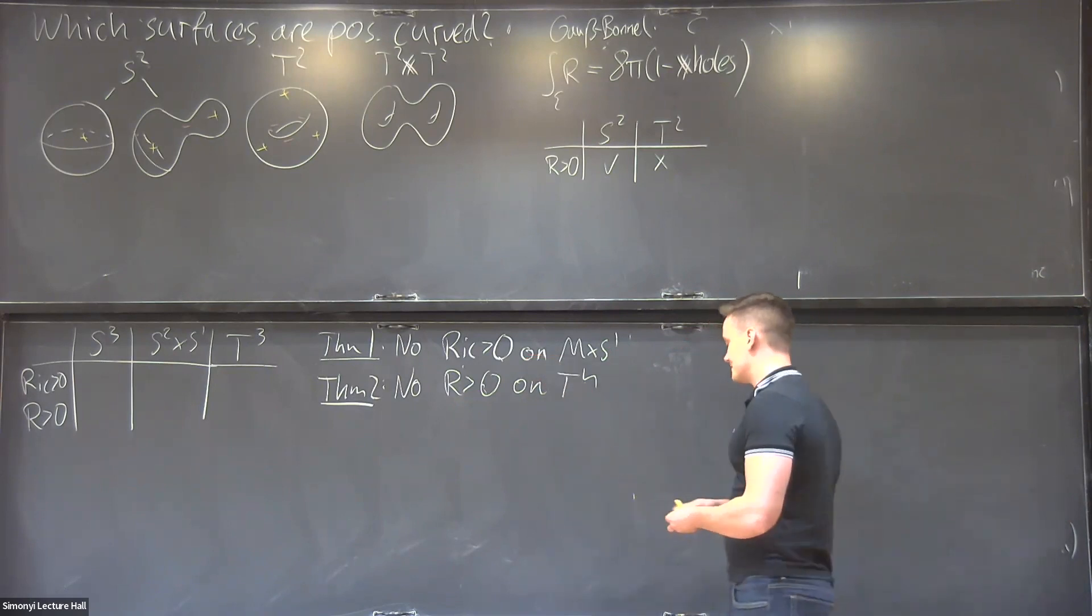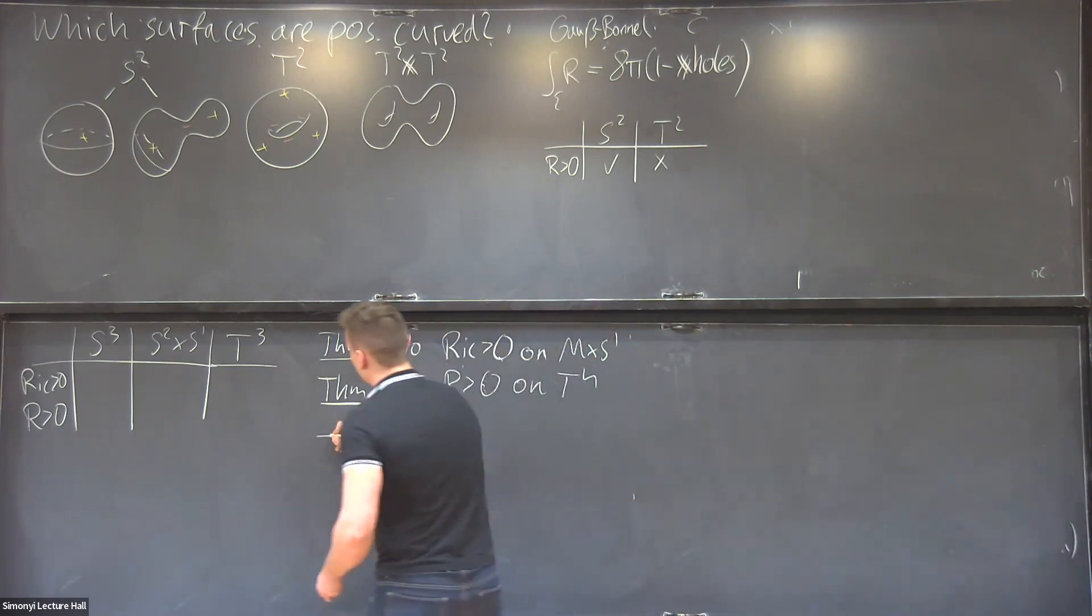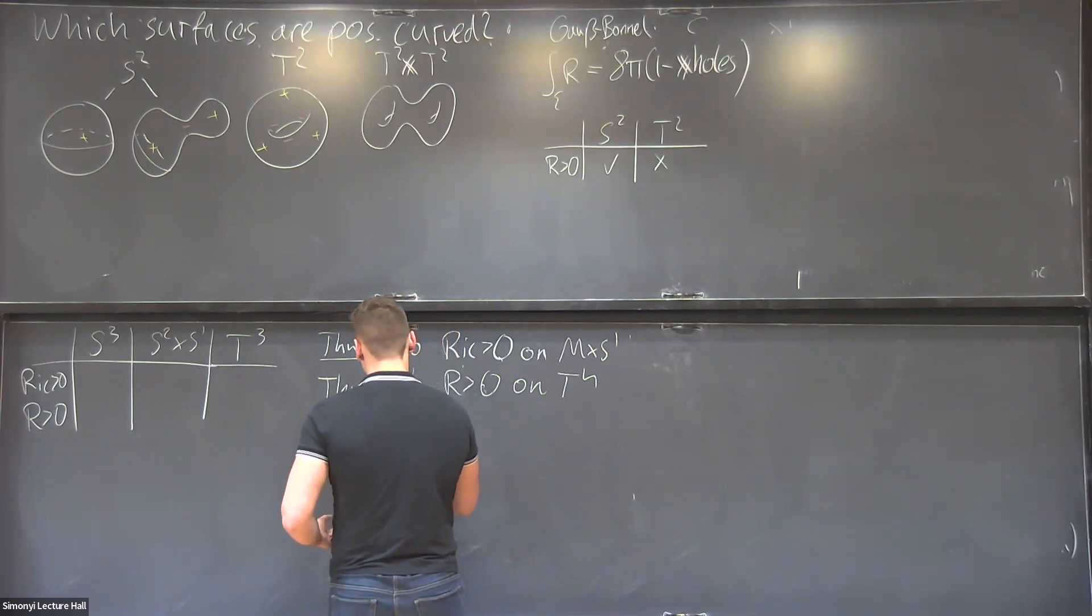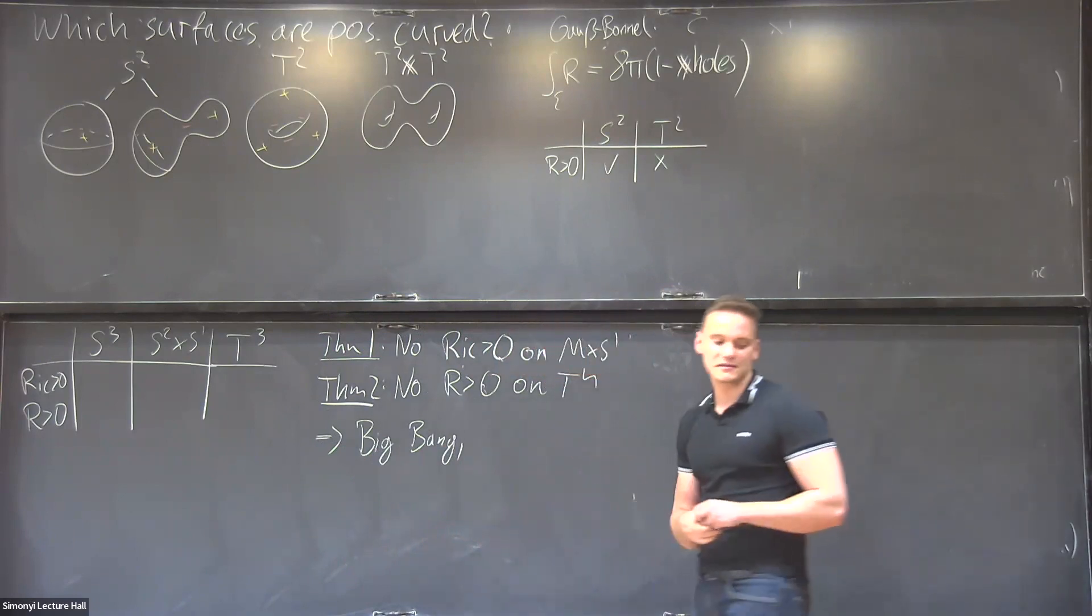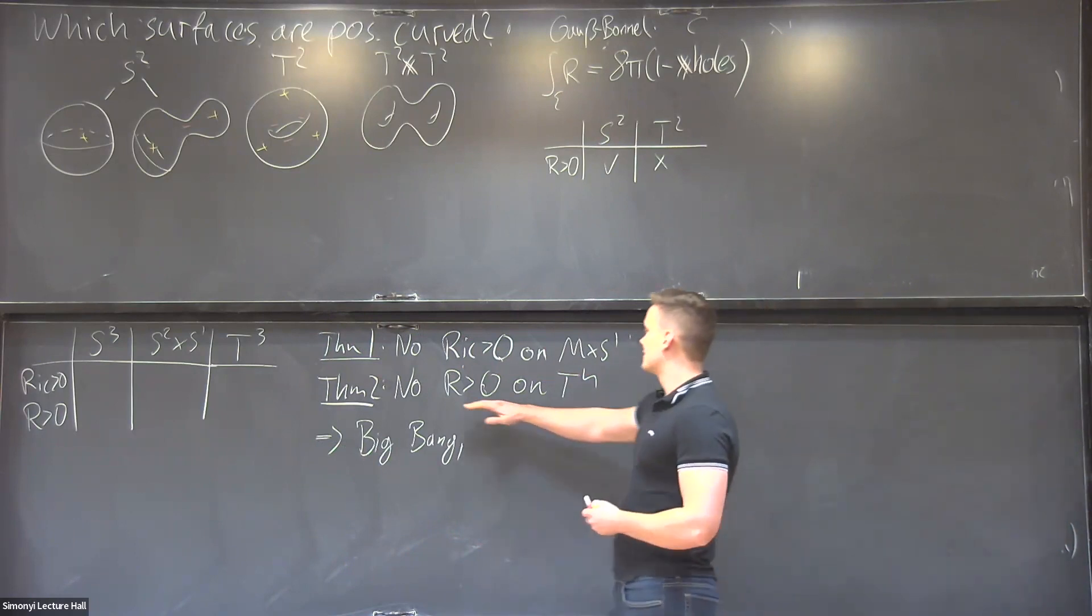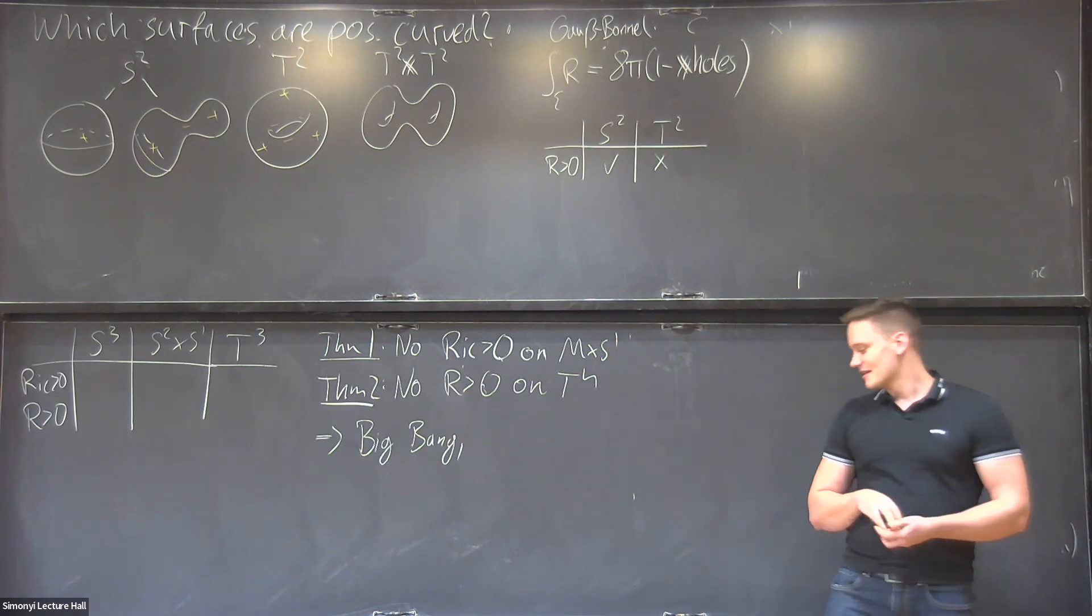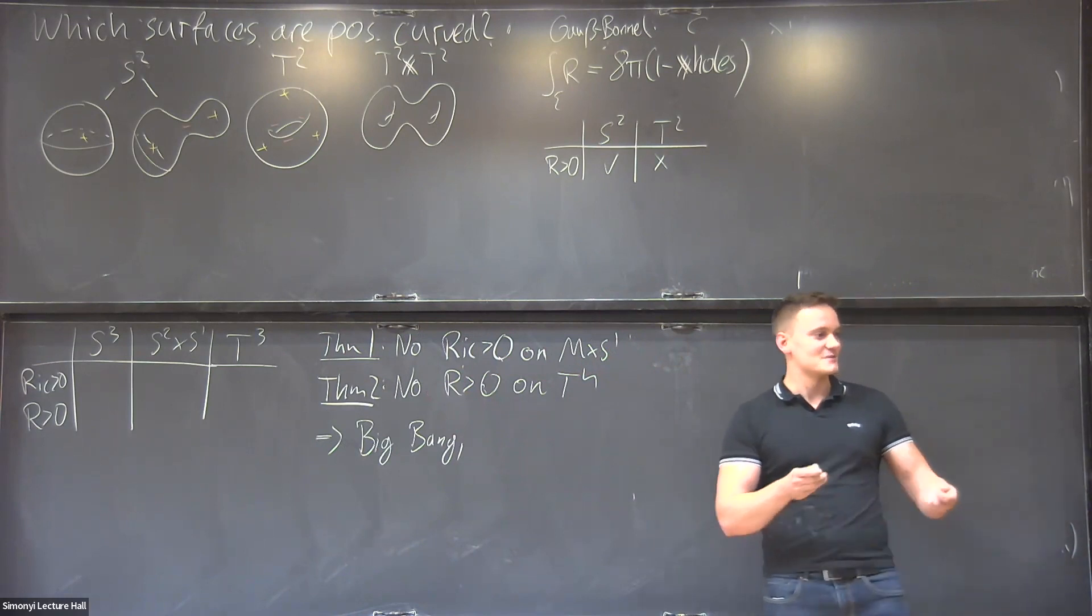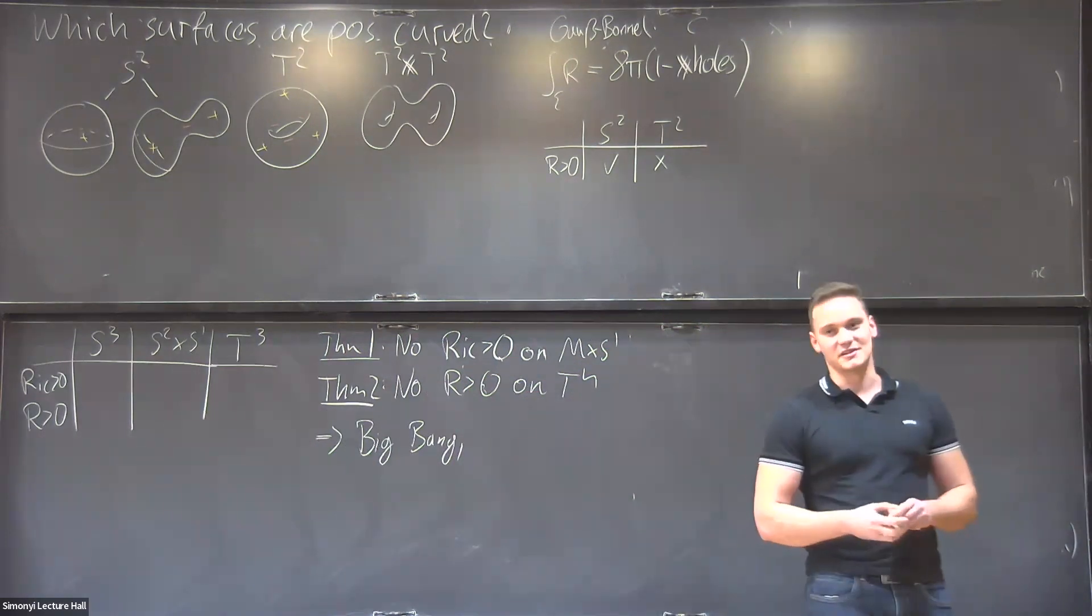And for instance, here for this one, the corresponding statement will be the Hawking singularity theorem. So it's basically the reason there's a Big Bang. And similarly, you can also do the Penrose singularity theorem regarding black holes. And then theorem two, that there's no positive scalar curvature on the torus is the reason, say, if I take here some chalk that it falls down, that has positive mass, that's precisely the reason for that. And the physical result has been proven by Schoen-Yau and Edward Witten.